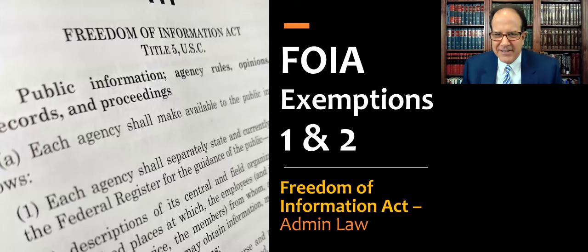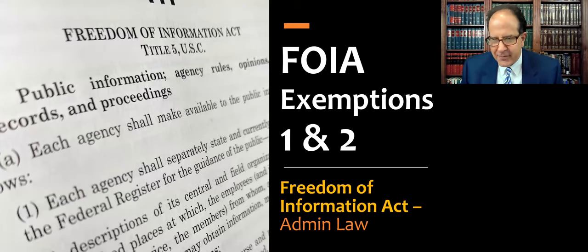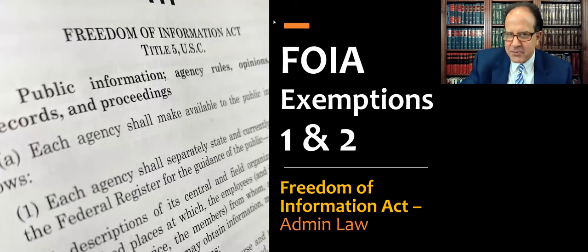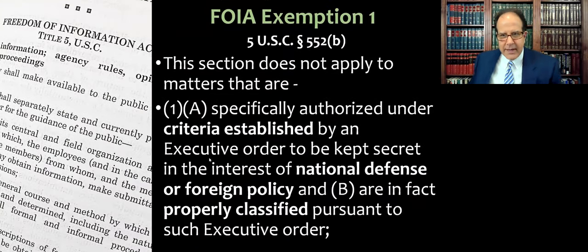I'm Drew Stevenson, and this is a lecture for my administrative law class about exemptions one and two to the Freedom of Information Act, or FOIA. There are nine exemptions — my students will remember — and this is where all the activity about FOIA happens, all the litigation. So you really should focus on learning the nine exemptions. We're going to talk about the first two here, and I'll go through those two exemptions and give two or three recent cases illustrating them. I think this is more useful than reading old cases from the 1970s or 80s about FOIA. We have a lot of development of the law since then, and it's also a little more interesting to see things that are happening right now or in the last few years.